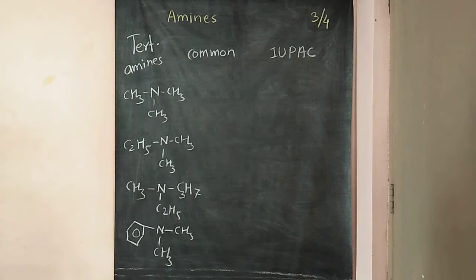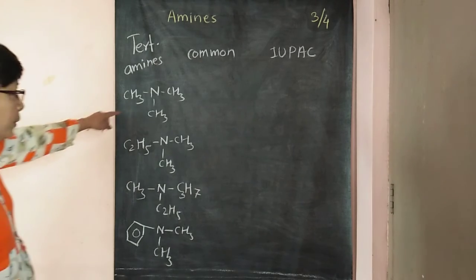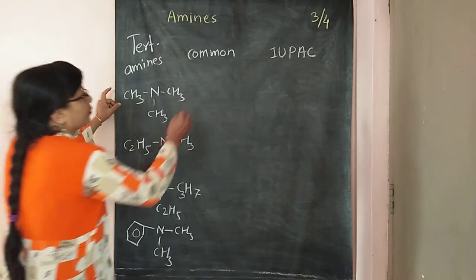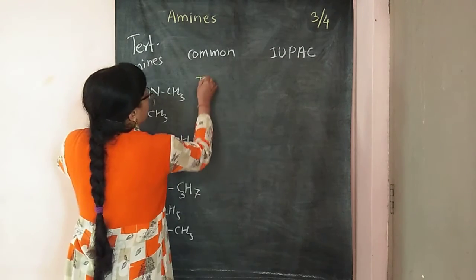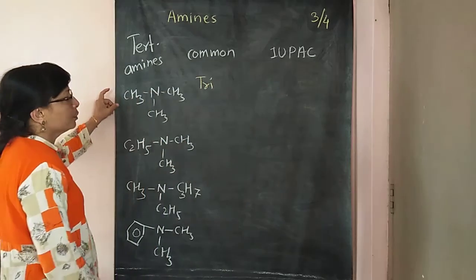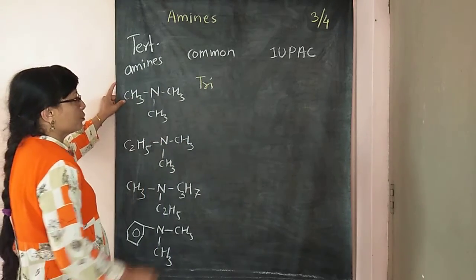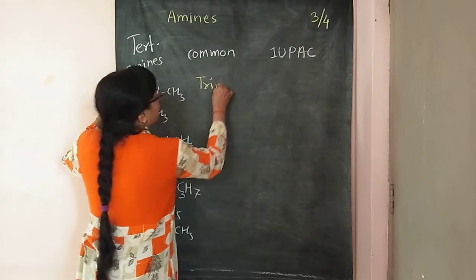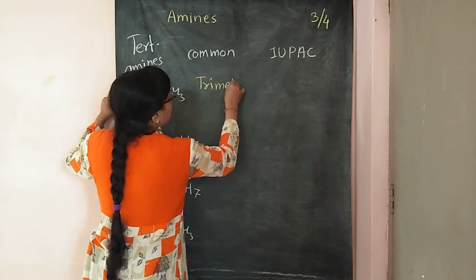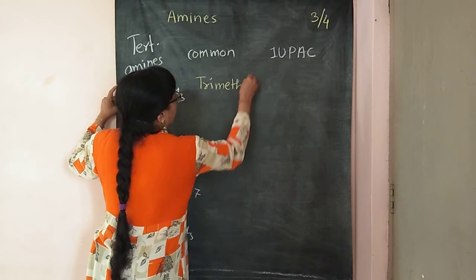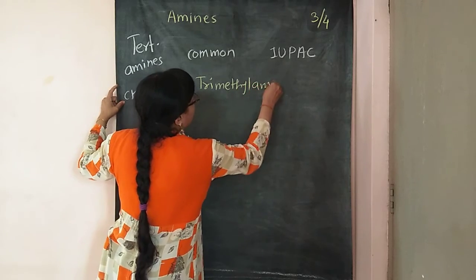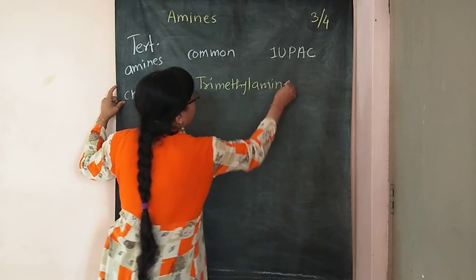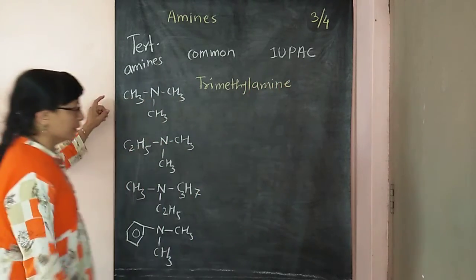Here three R groups are the same. So the name in the common name system uses the prefix 'tri'. Here tri-methyl, and the next word is amine — trimethylamine.